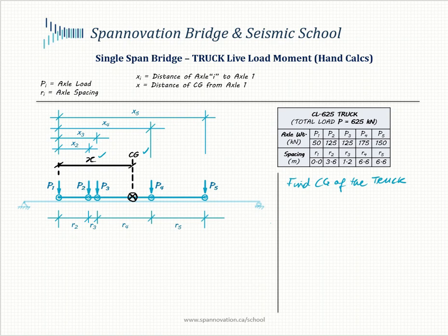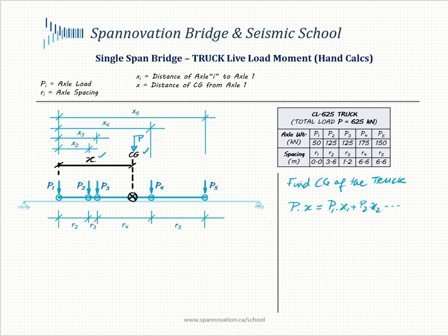To find the CG of the truck, I take the moment of the entire load P about P1. That gives P times X equal to the sum of individual axle moments: P1 times X1 plus P2 times X2 and so on through P5 times X5. Mathematically, P times X equals the summation from i=1 to 5 of Pi times Xi.